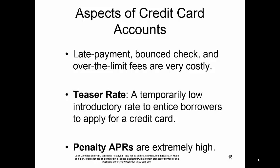Penalty APRs — in the example we saw, they're 28.99%. In most cases, if you're 60 days or more late, you're going to be subject to the penalty APR. If you're paying 30% interest or close to it, the likelihood of you ever paying that account off is very rare.